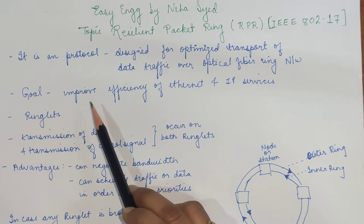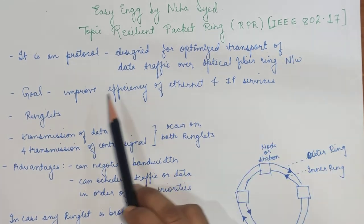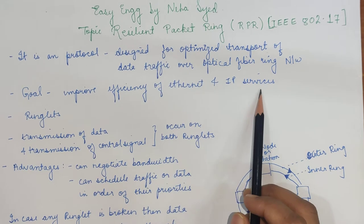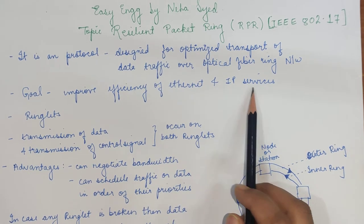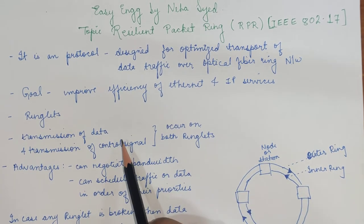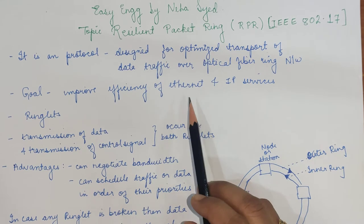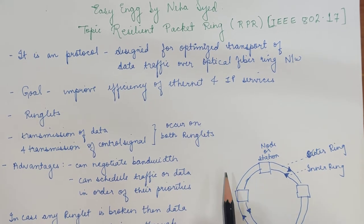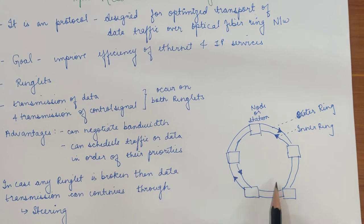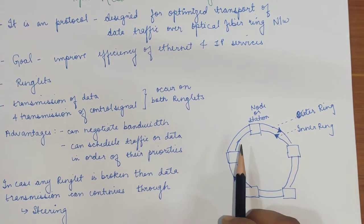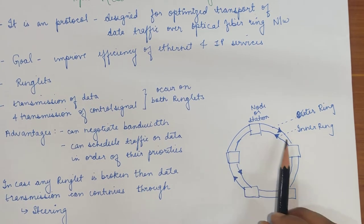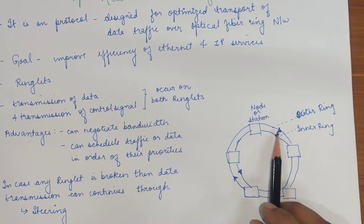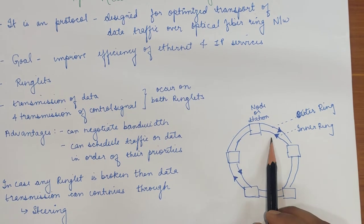The main goal of Resilient Packet Ring was to improve the efficiency of Ethernet and IP services. The nodes and stations are connected in a dual ring structure. As you can see in this figure, there are two different rings, both rotating in opposite directions.